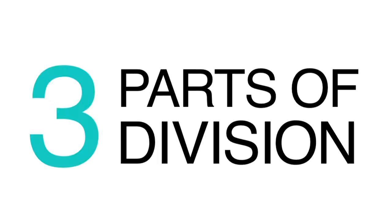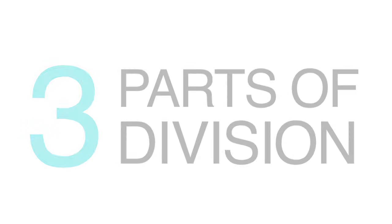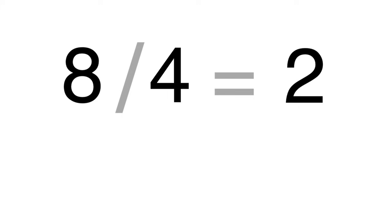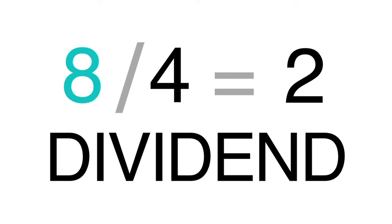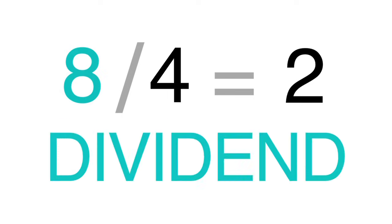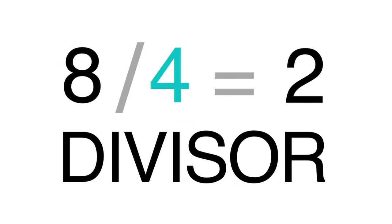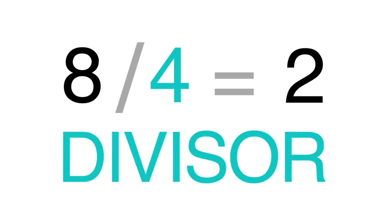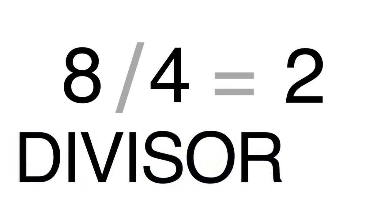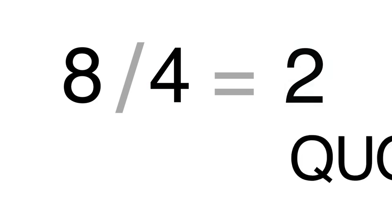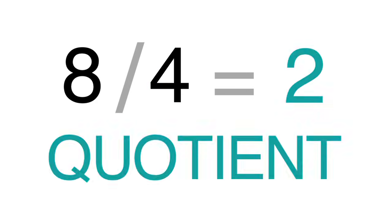There are also three names for each part of the division problem. The number you are dividing is called the dividend. The number you are dividing by is the divisor. The resulting number is the quotient.